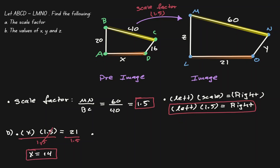Now let's find the value of Y. Y is the line segment NO, and that matches with line segment CD. Using the same relationship, the left-hand side is 16; if we multiply it by the scale factor of 1.5, we get the length on the right-hand side, which is Y. So Y has a value of 24.